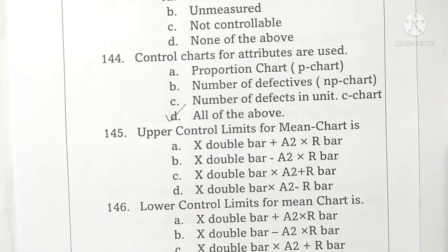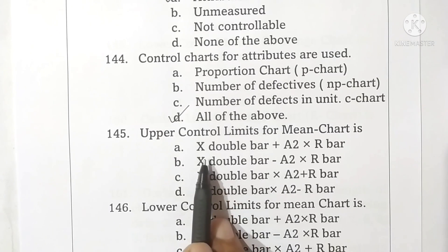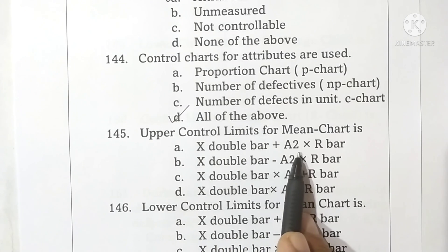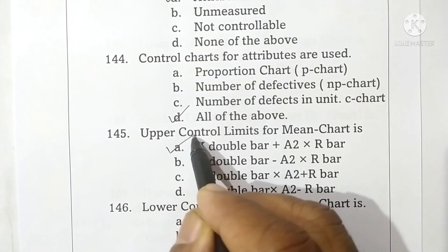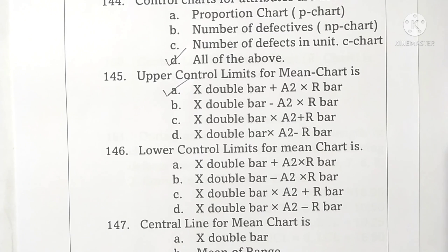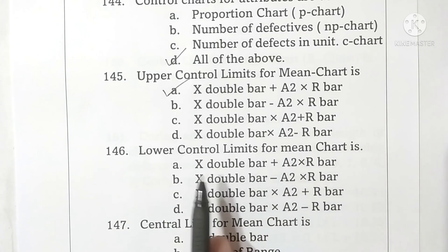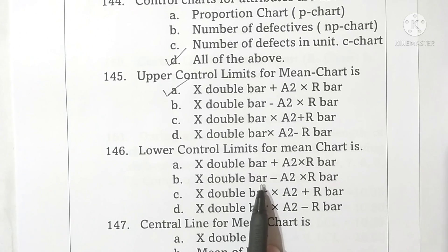Question 145: the upper control limit for the mean chart is x-double-bar plus A2 into R-bar. Option A is correct. Question 146: the lower control limit for the mean chart is x-double-bar minus A2 into R-bar. Option B is correct.